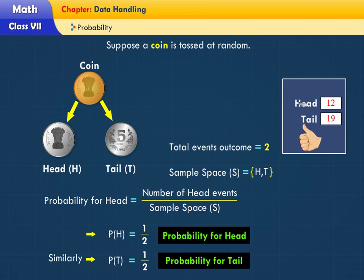Similarly, P(T) equals one by two, the probability for tail.